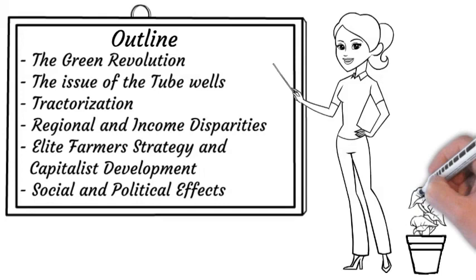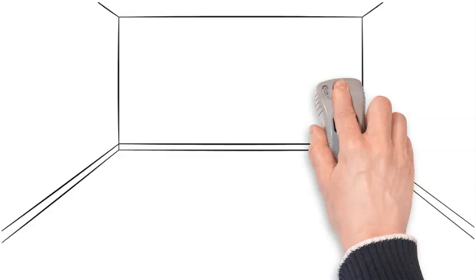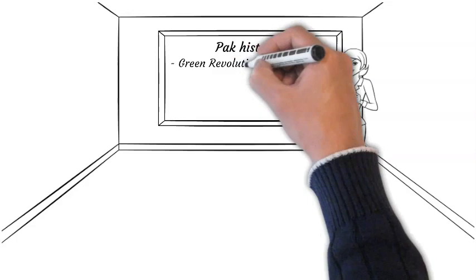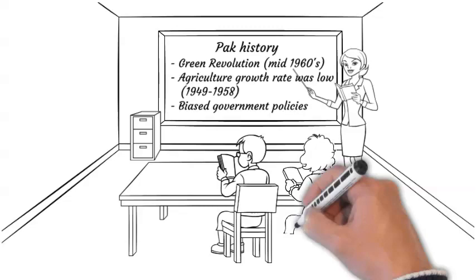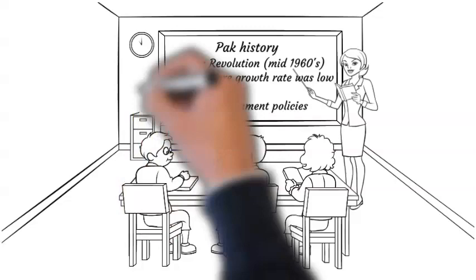One of the most important events in Pakistan's agricultural history was the green revolution, which occurred in the mid-1960s. When Pakistan came into being, from 1949 to 1958 the annual growth rate in agriculture was very low. Government policies were biased against agriculture, but towards the end of the 1950s the government realized that growth in agriculture was necessary for the survival of the country.